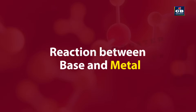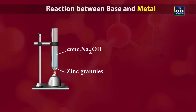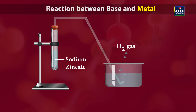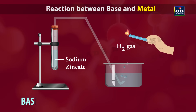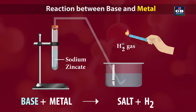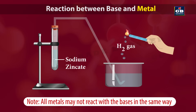Now let us see the reaction between a base and a metal. Add few zinc granules to 5 ml of concentrated sodium hydroxide and warm the contents using a burner. They both react and form a salt called sodium zincate and hydrogen gas. So: base plus metal gives rise to salt plus hydrogen gas. But all metals may not react with bases in the same way.